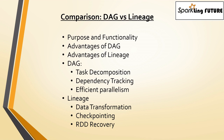In the DAG, what exactly it does: task decomposition happens — the Spark job is broken down into a series of smaller tasks or stages. Dependency tracking is done as DAG keeps track of the dependencies between tasks and optimizes the execution order. And efficient parallelism means tasks are executed in parallel across a distributed cluster for faster processing.